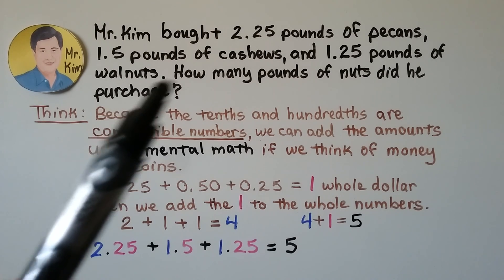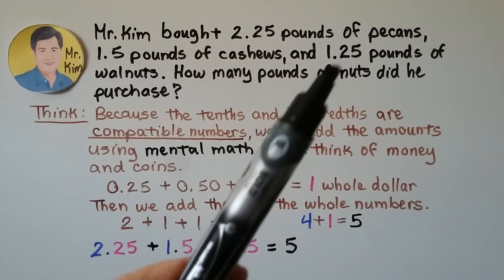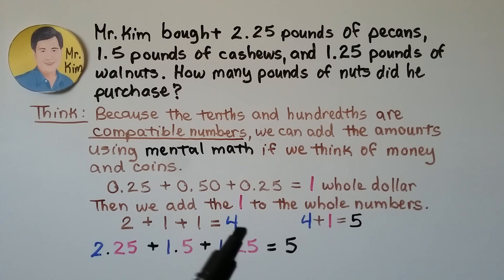Then we add the one to the whole numbers. We have a 2, a 1, and a 1. That would be 4. We add the 4 and the 1 to get 5. We know that 2 and 25 hundredths plus 1 and 5 tenths plus 1 and 25 hundredths is equal to 5 whole.